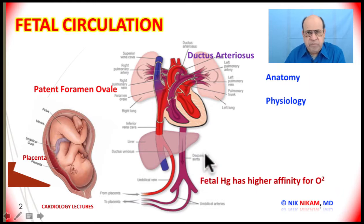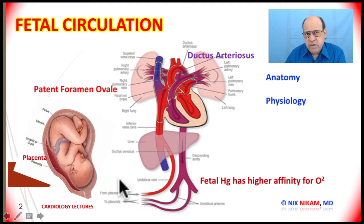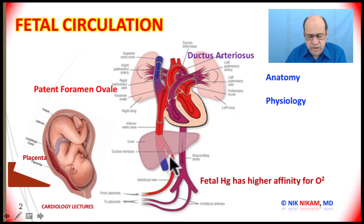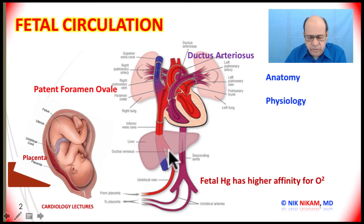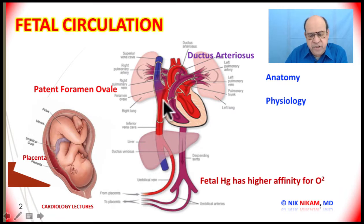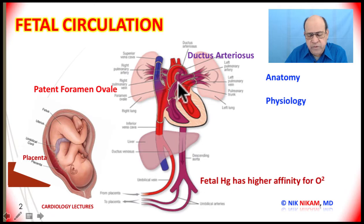Now let us talk about the blood circulation. The oxygenated blood from the placenta reaches the fetal circulation through the umbilical vein. Part of it goes through the liver and through the portal system it reaches the right atrium, and part of it through the ductus venosus which joins the inferior vena cava reaches the right atrium. This oxygenated blood coming from the lower part of the body is preferentially directed through the patent foramen ovale, redirecting blood through the left atrium, then through the left ventricle, through the aorta, supplying blood to the rest of the body.